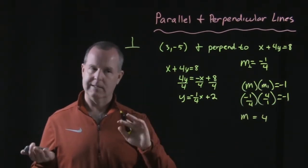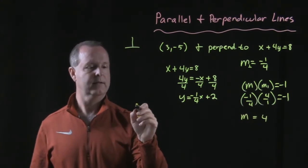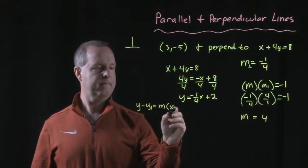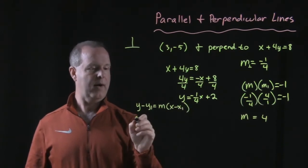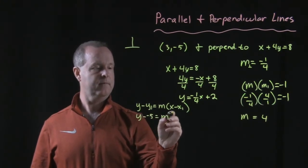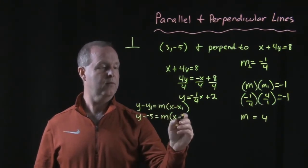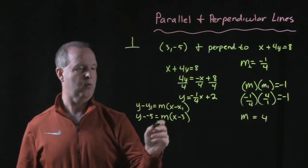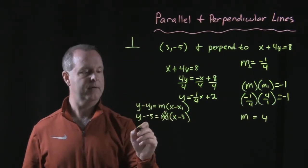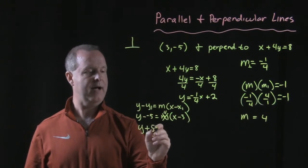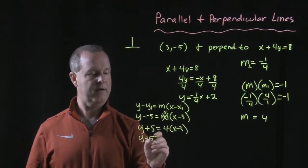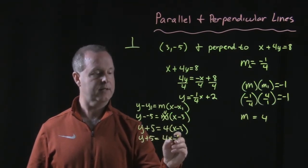So what do we do? Point-slope form, right? y - y₁... My y₁ point is -5... And x - 3. Whoops, I knew what my slope was. My slope is 4. Let's put a 4 in there. All right, let's clean that up. y + 5 = 4(x - 3). y + 5 = 4x - 12.